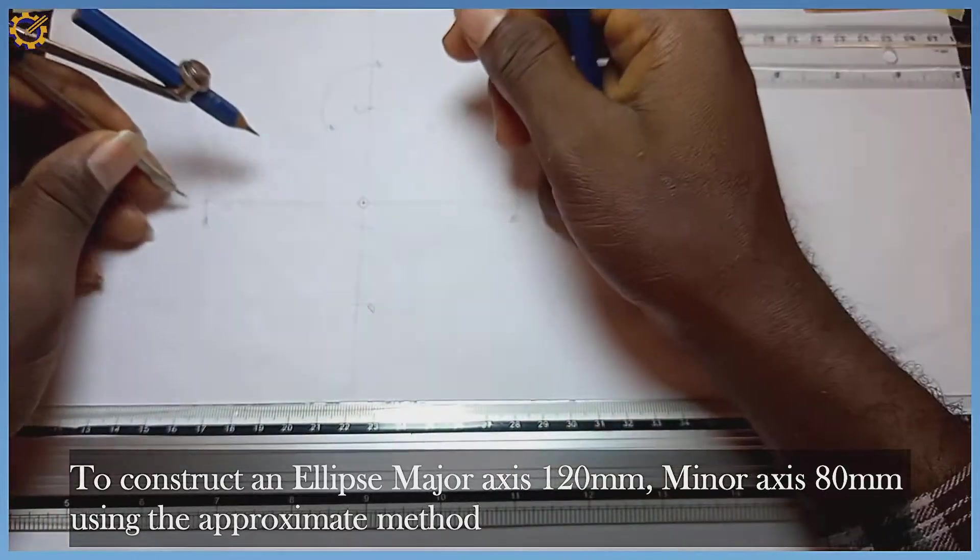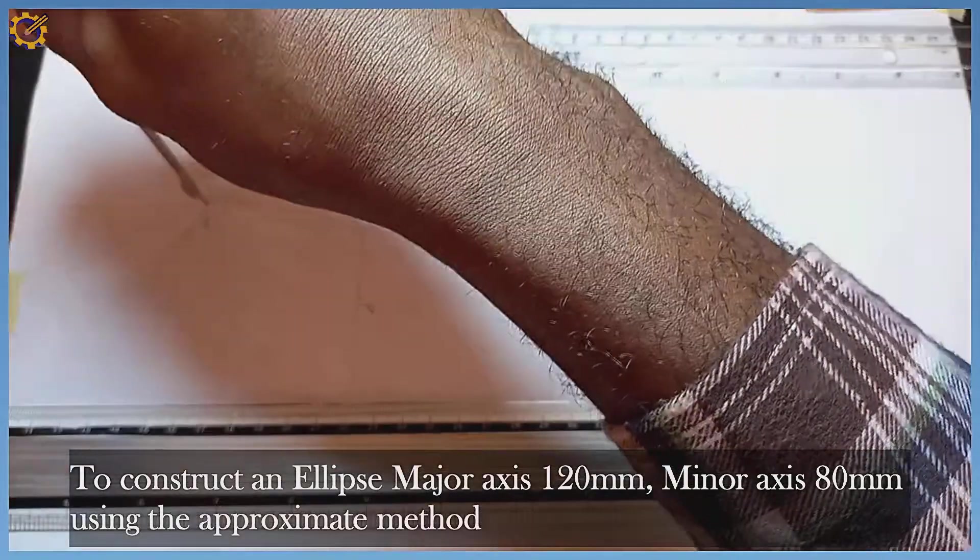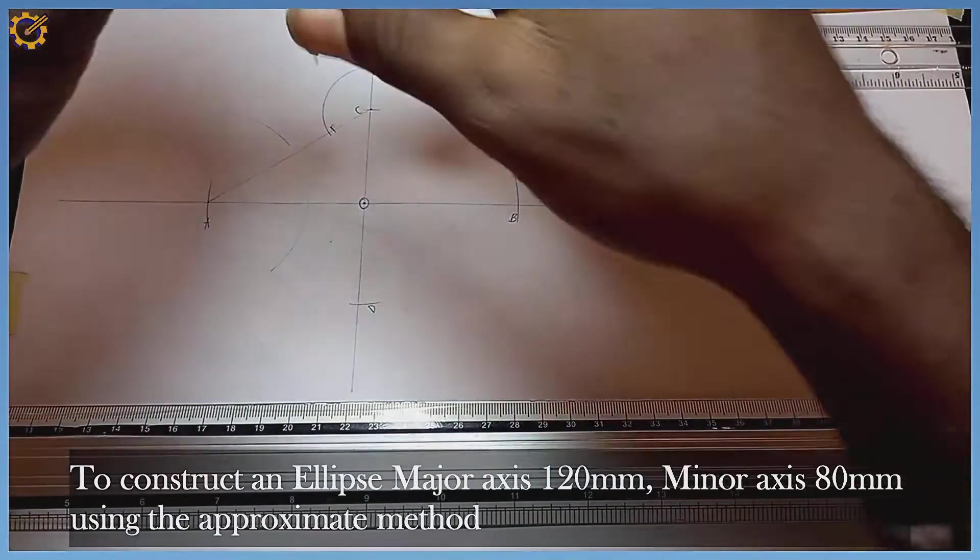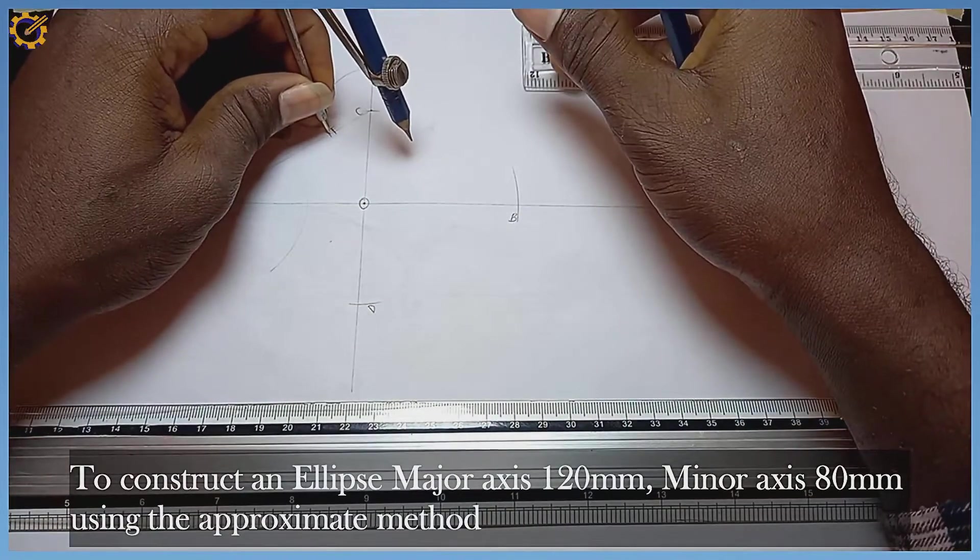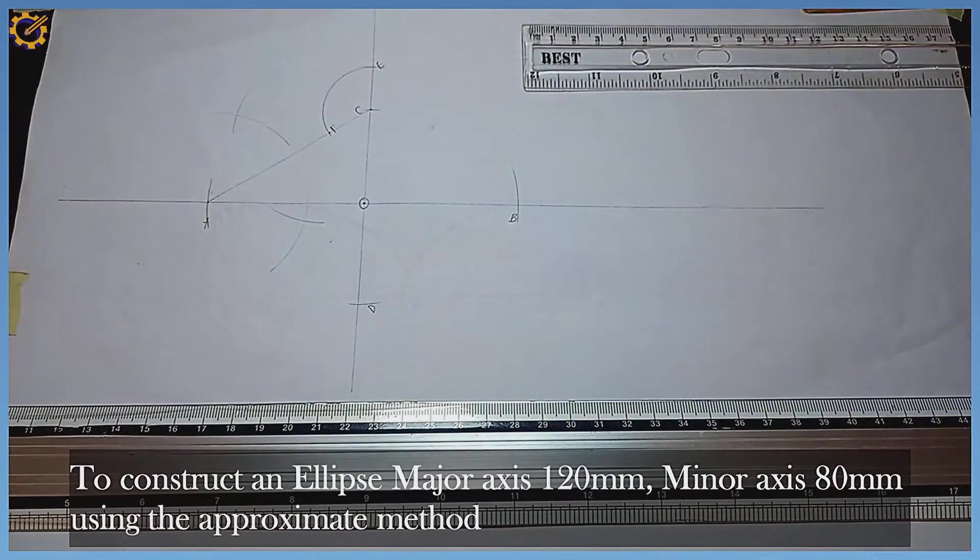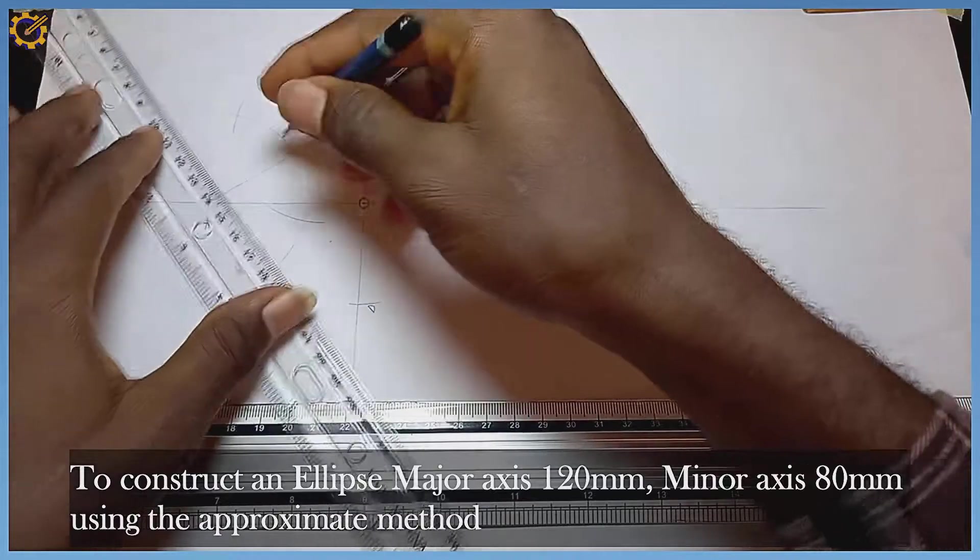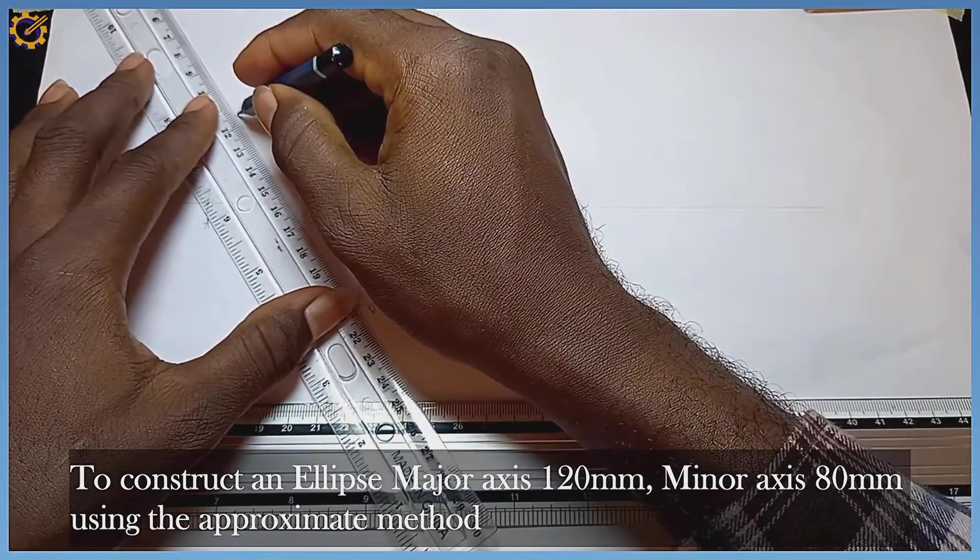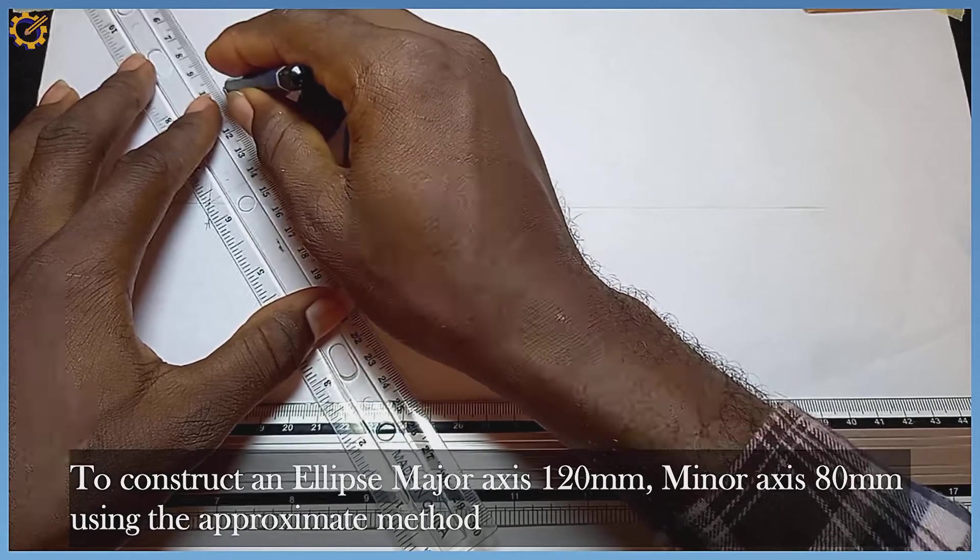I am going to bisect distance AF with my compass. I do it up and bottom on mark A, then on mark F right here I do it up and bottom. The next procedure is to join the bisector altogether.